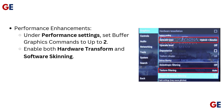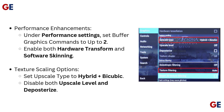Performance enhancements: under performance settings, set buffer graphics commands to up to 2. Enable both hardware transform and software skinning. For texture scaling options, set upscale type to hybrid plus bicubic, and disable both upscale level and deposterize.